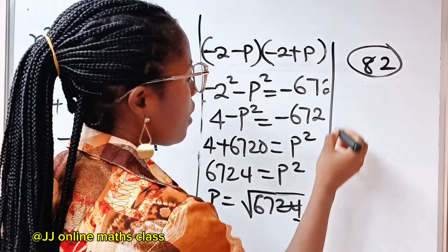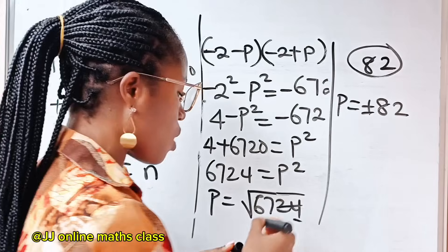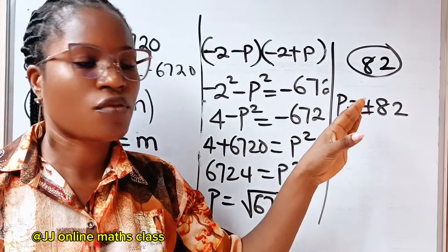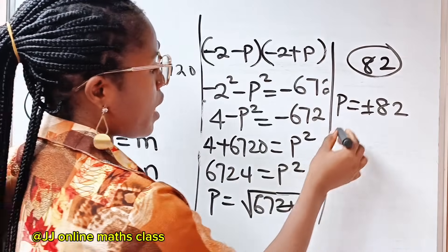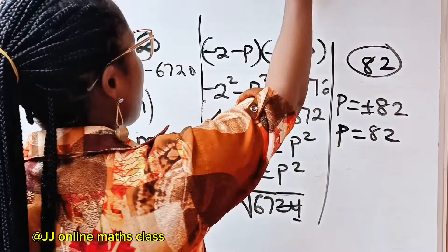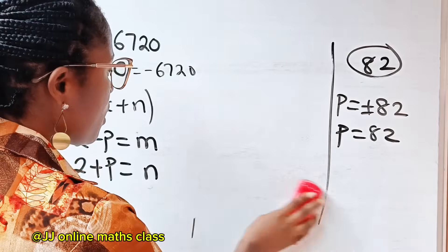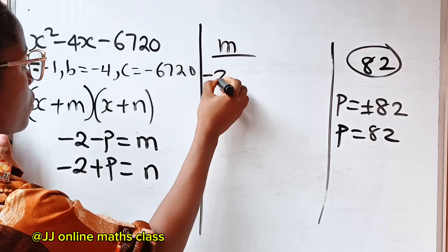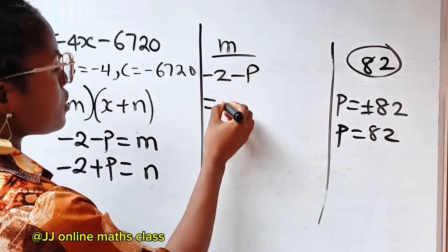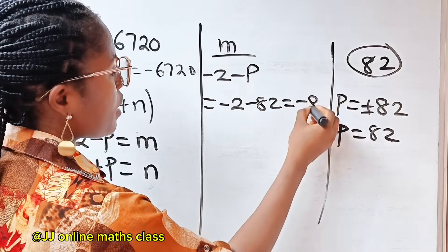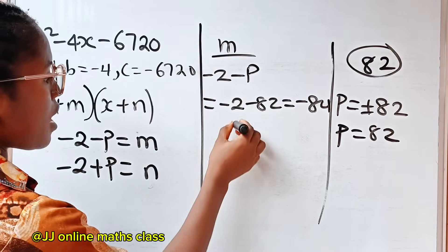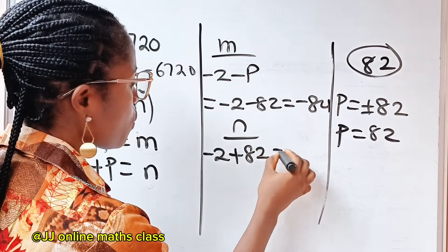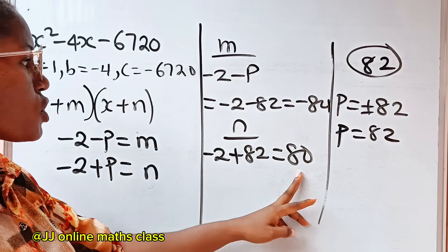So it means that our p is equal to plus or minus 82. But in this case, it doesn't matter. Whether positive or negative, they will give you the same result. So I'll rather go with just the positive result. Our p is 82. Now, let's go back to the equation and substitute our value. Our m is minus 2 minus p, which equals minus 2 minus 82, which is minus 84. Our n is minus 2 plus p, which is minus 2 plus 82, which will give us 80.